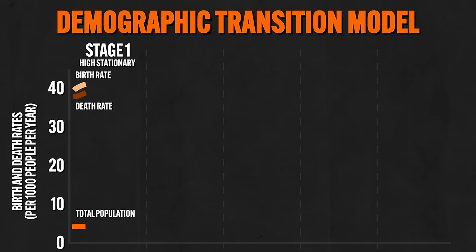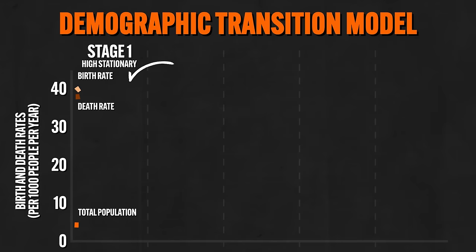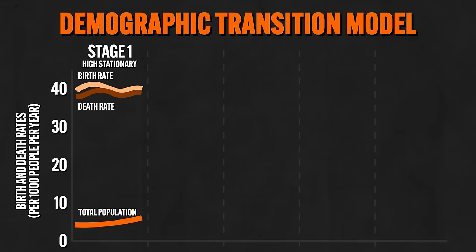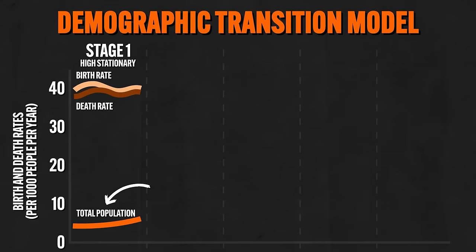Stage one is the high stationary phase — a pre-industrial, agrarian population. Birth rates and death rates are both high, which mostly cancel each other out, leading to a stable population. Agrarian people tended to have lots of babies because they needed help on the farm, but poor nutrition and disease meant the average lifespan was in the 30s, keeping the death rate high as well. No present nation is in stage one. Stage two is the early expanding stage, corresponding to a population's entry into industrialization. The birth rate remains high but the death rate drops precipitously due to advances in science, new medicines, better nutrition, and vaccinations — creating a dramatic population explosion.